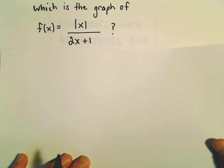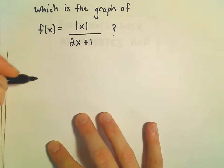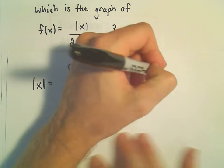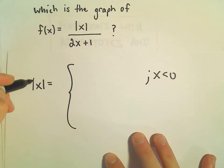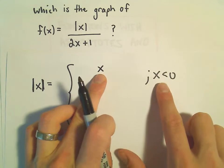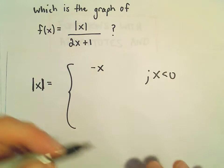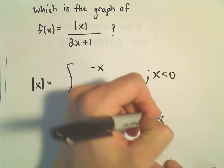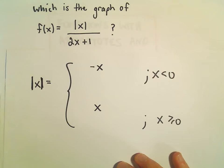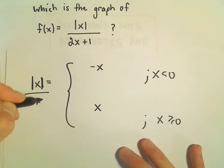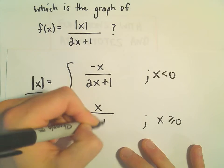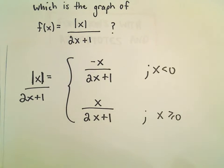The first thing we could do is make this into a piecewise function. Recall the absolute value of x: if x is less than 0, we have to take the negative of that value. And if x is greater than or equal to 0, the absolute value of x is just x. If we divide all of that by 2x plus 1, we can divide each piece by 2x plus 1, and now we've got our different formulas.